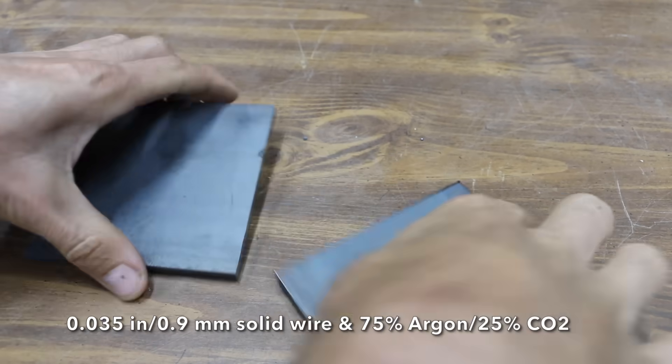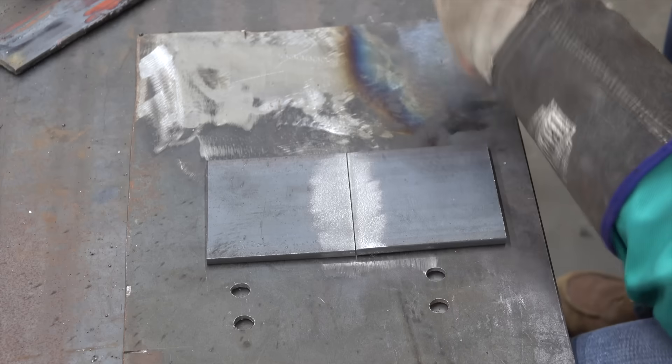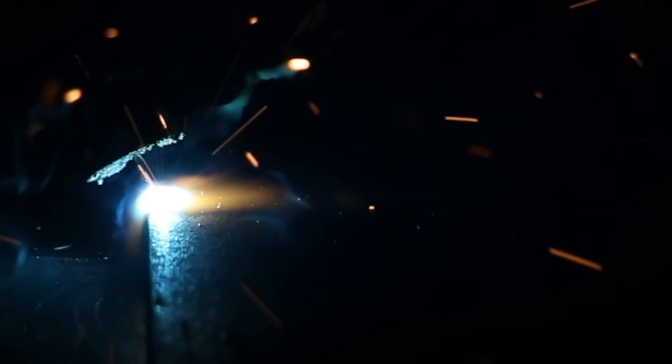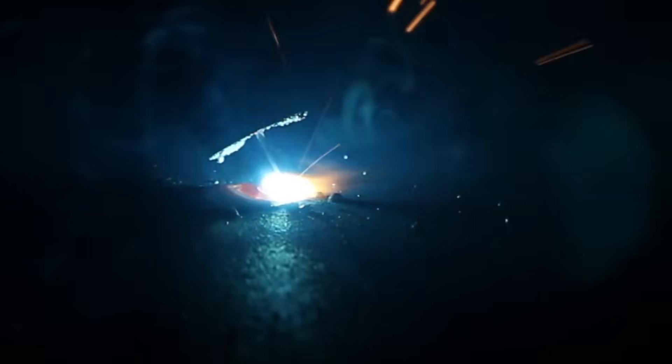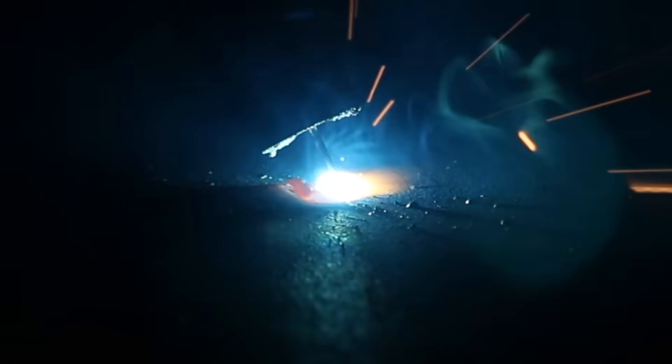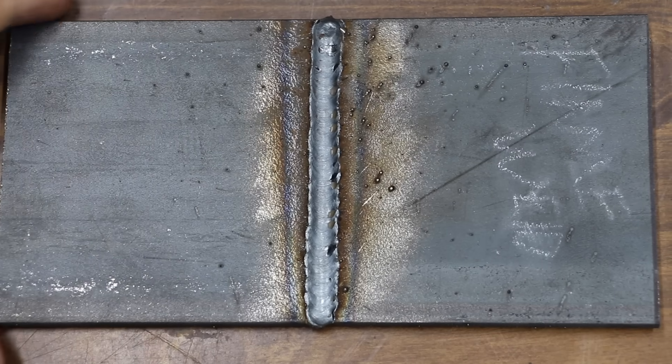In the next test, Virgil will be using 0.035 solid wire with argon CO2 shielding gas to butt weld quarter inch steel plate using the flame weld. All the welding machines have been set up to get the best possible penetration. However, the flame weld just doesn't produce enough current to achieve good penetration, but it does make a pretty nice looking weld.